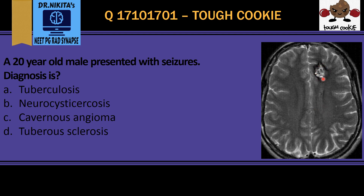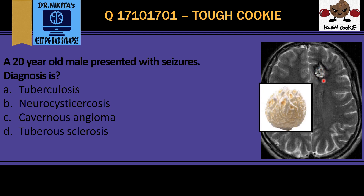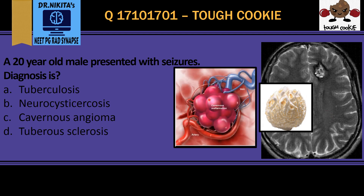The lesion has a multi-loculated, multi-lobulated appearance — again, like that of a popcorn ball. We have a popcorn ball-like appearance with a black ring surrounding it. This black ring is due to hemosiderin. This popcorn-like appearance with a hemosiderin ring on T2-weighted imaging is very classical of a cavernous malformation.